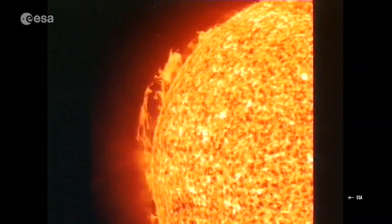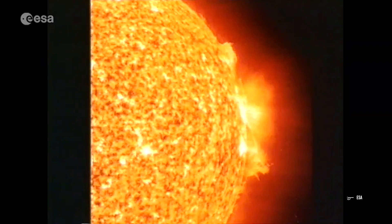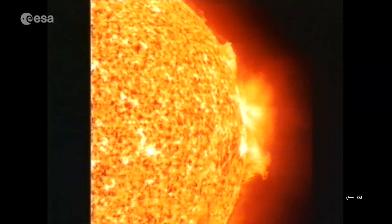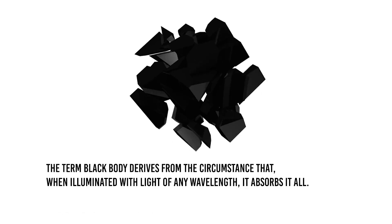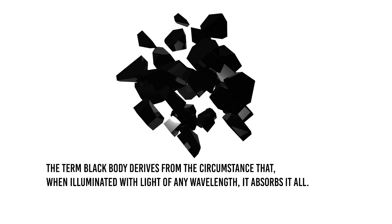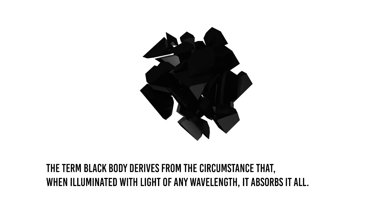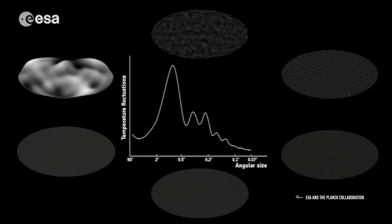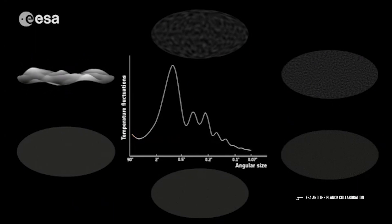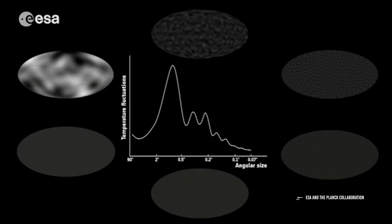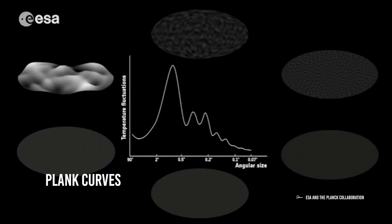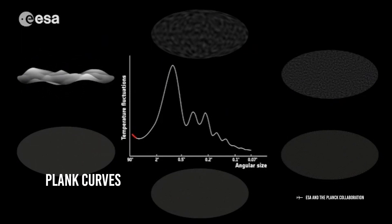This relationship between the intensity of the emitted radiation and its wavelength can be studied by assuming that the star is comparable to a black body — that is, an ideal body capable of absorbing all the electromagnetic radiation, both in the visible and in the other regions of the spectrum. The term black body derives from the circumstance that when illuminated with light of any wavelength, it absorbs it all. By plotting the intensity of the emitted radiation as a function of the wavelength, we obtain a series of bell curves known as Planck curves, each of which represents the continuous spectrum of the star.